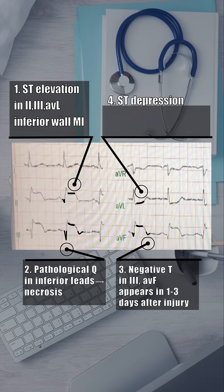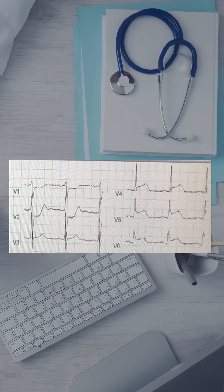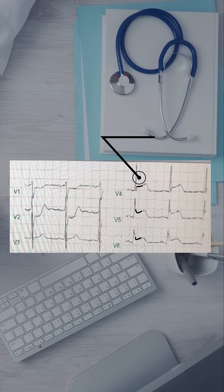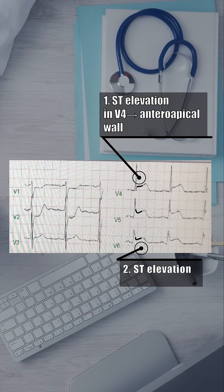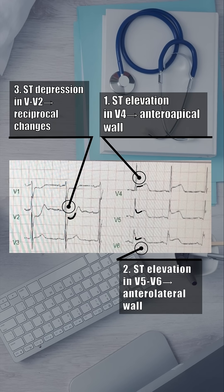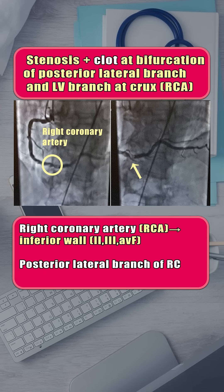Lead aVL shows ST depression — the reciprocal change. In the chest leads, ST elevation from V4 to V6 suggests anteroapical and anterolateral wall involvement, with reciprocal ST depression in V1 and V2. Angiography confirmed a right coronary artery clot at the bifurcation of the posterior lateral and left ventricular branches at the crux, explaining both the inferior wall changes and the changes in V4–V6.